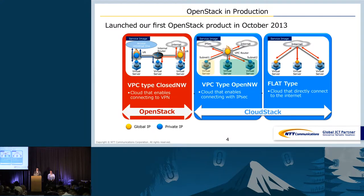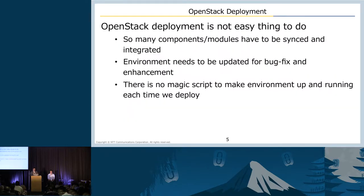As I mentioned, we are using OpenStack in production, and our first production was released in 2013. This product features that you can establish VPN connection for closed network while keeping global internet access. To make this happen, we chose OpenStack rather than CloudStack, because OpenStack has much more control and flexibility on networking via standardized APIs. Using OpenStack for our product is successful, but we also learned that managing OpenStack environment is not easy, and sometimes very painful.